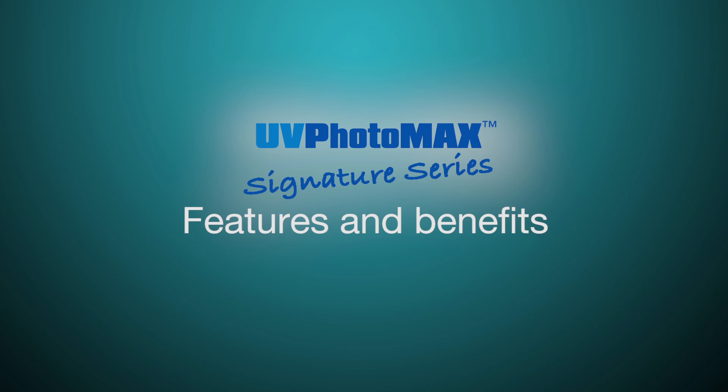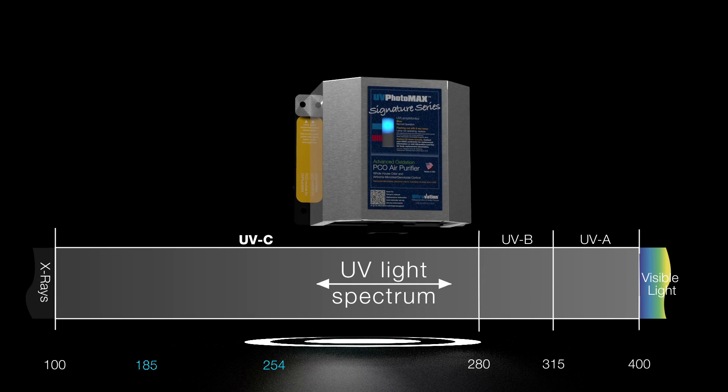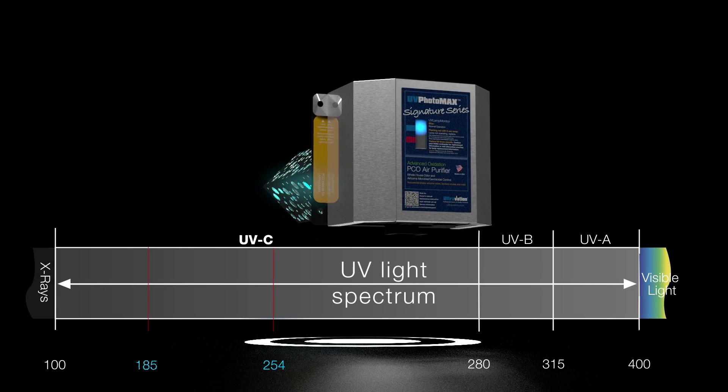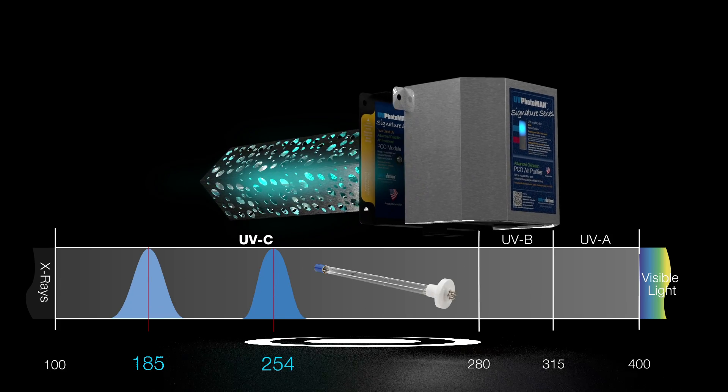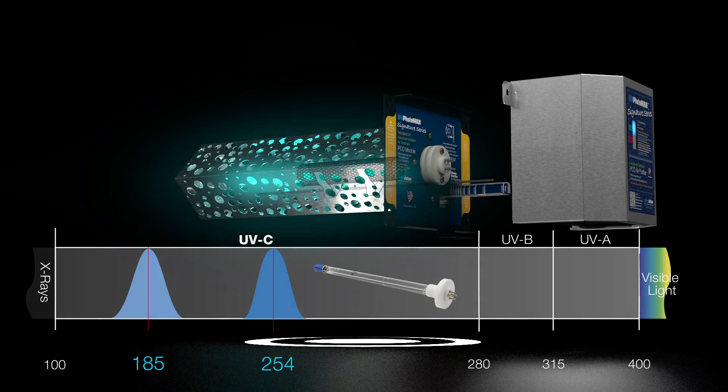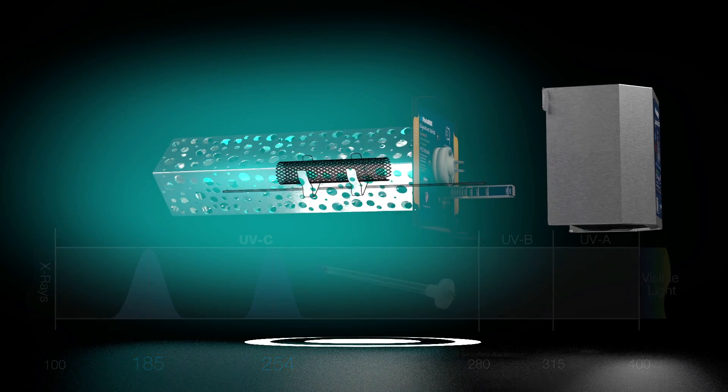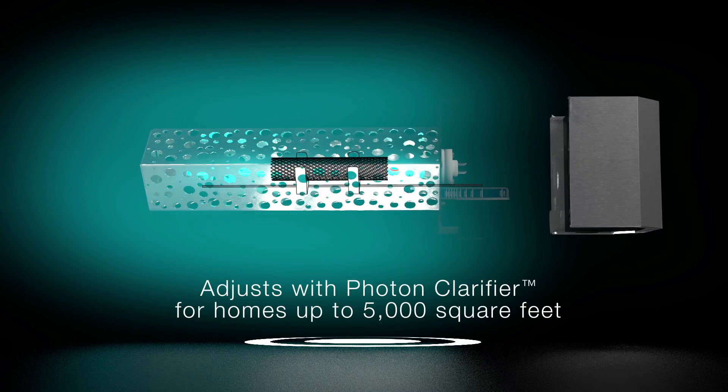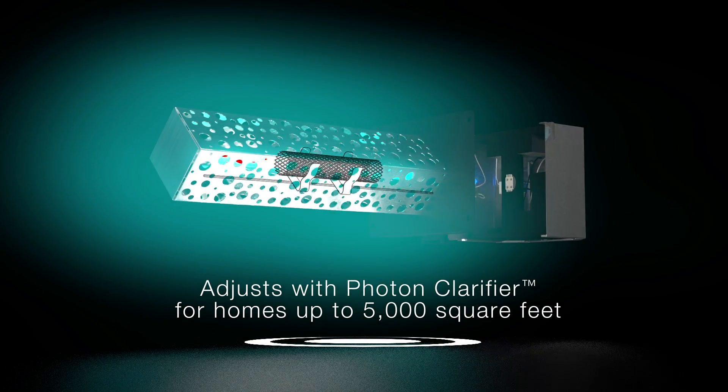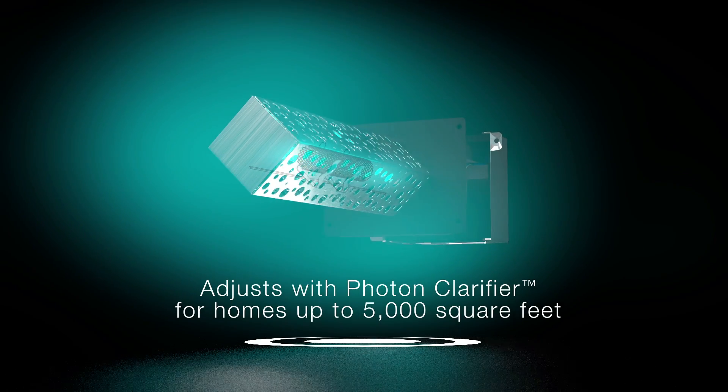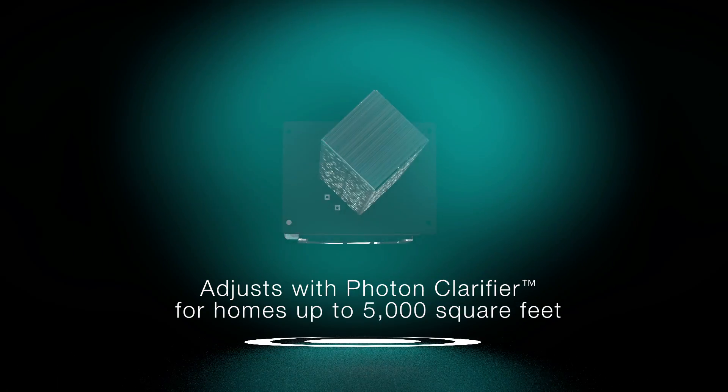UV Photomax has many exclusive features. UV Photomax Advanced Oxidation Air Purification is unmatched because it features an exclusive and patented dual spectrum UVC germicidal system. This advanced purifier design creates an oxidation field that surrounds the PCO module that is adjustable using the patented photon clarifier so that the UV Photomax is ready to clean the air in any home, up to 5,000 square feet.